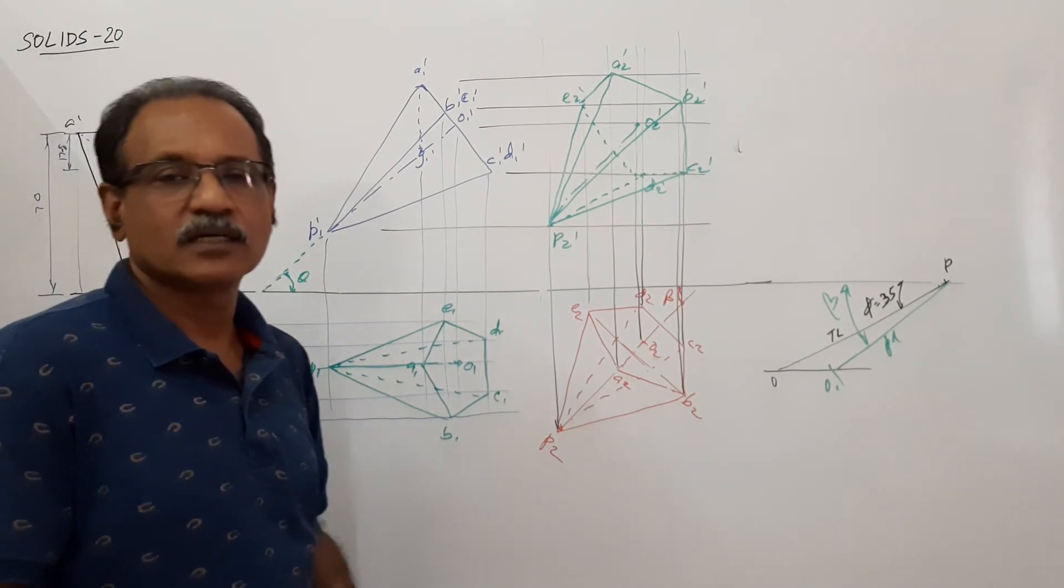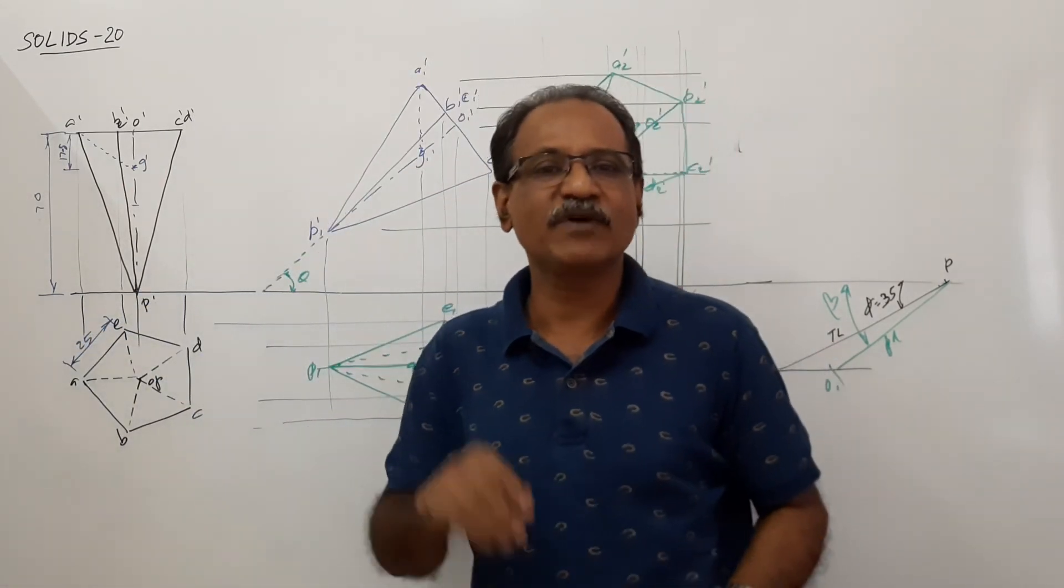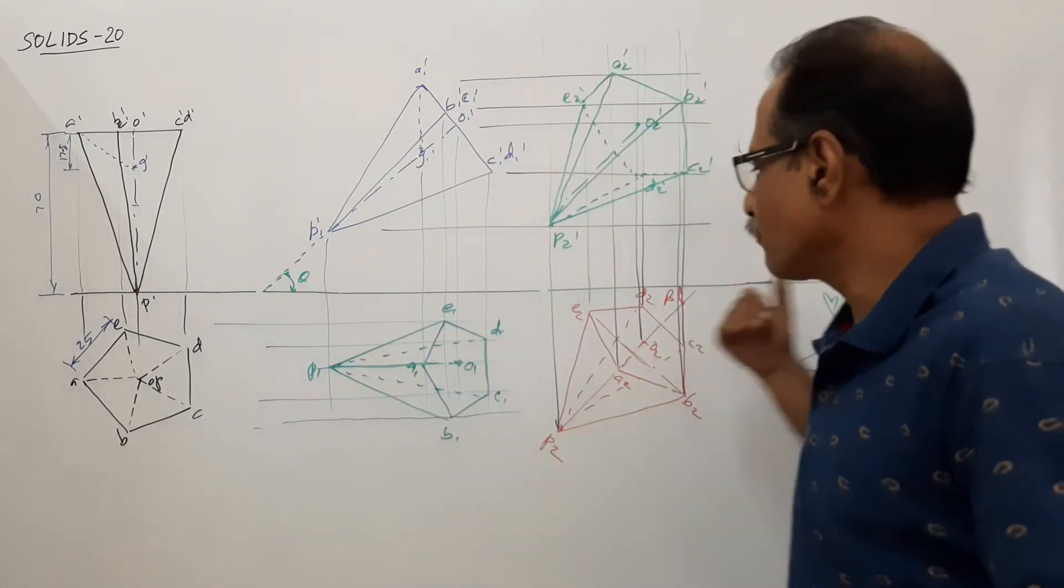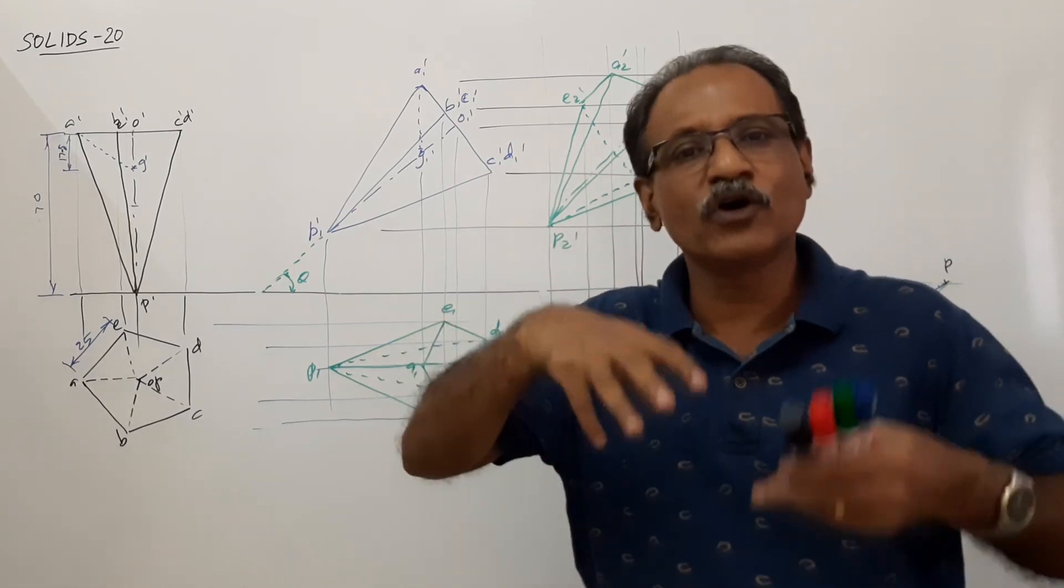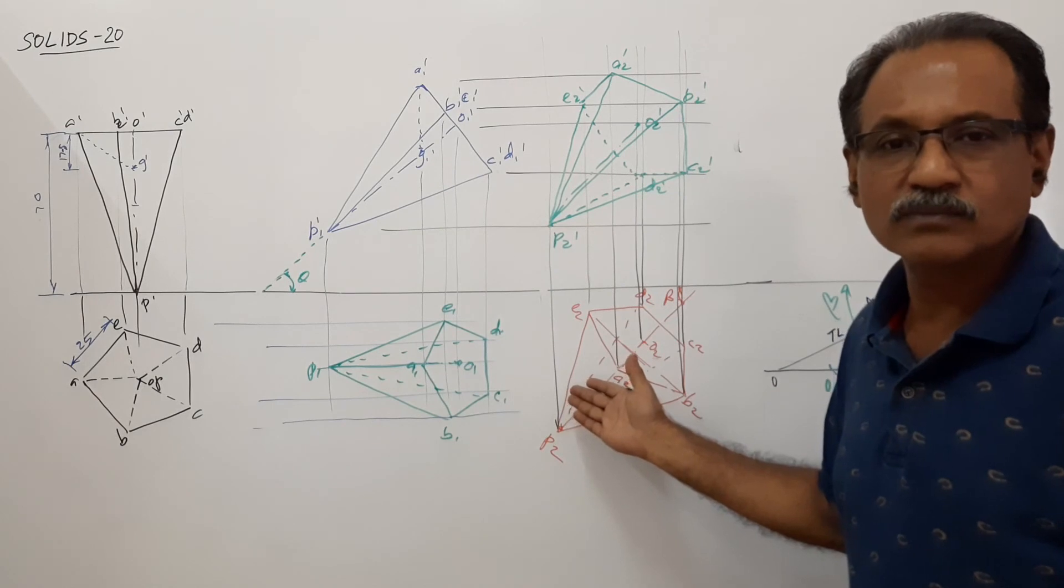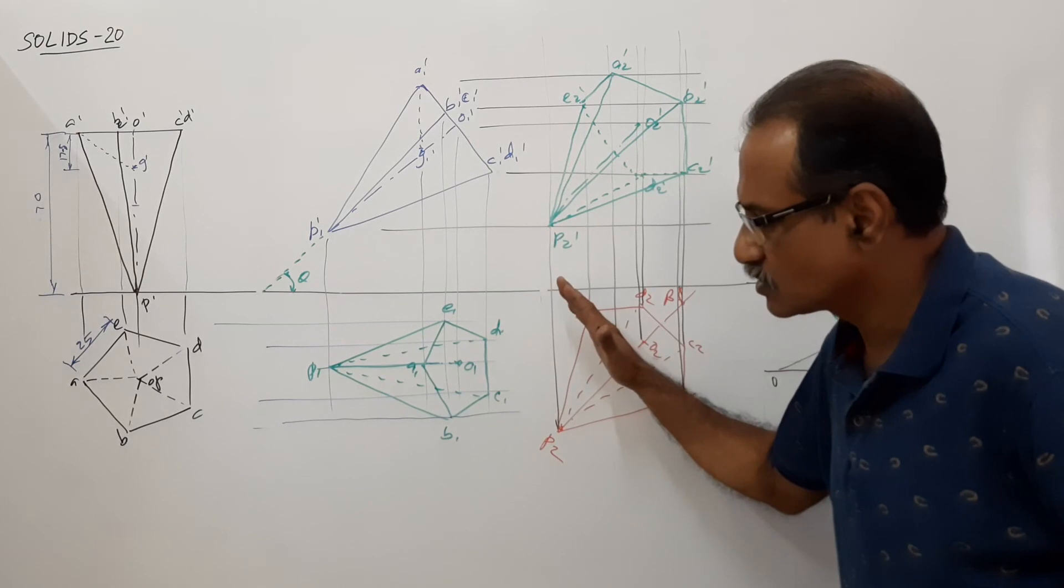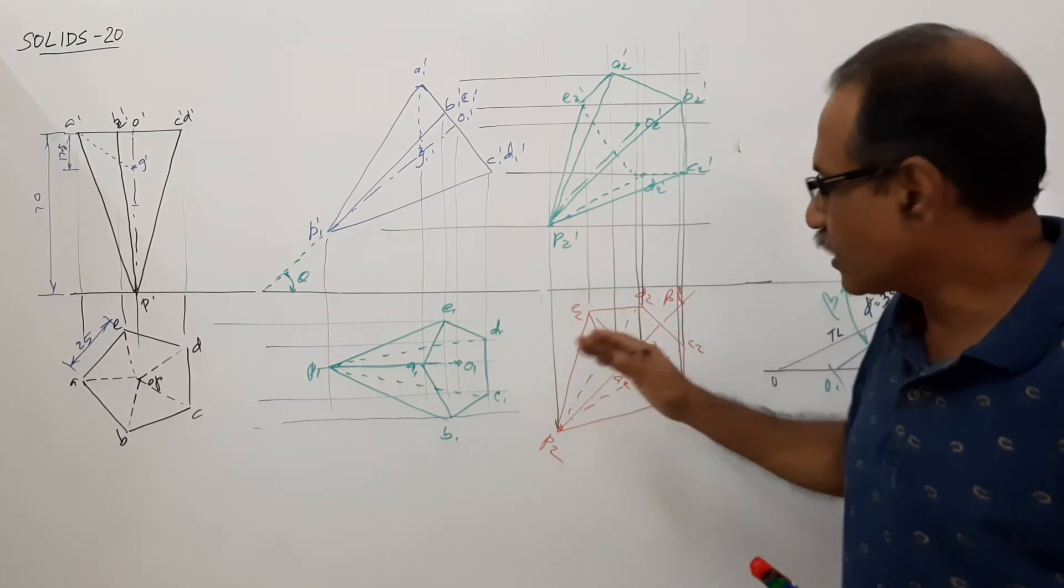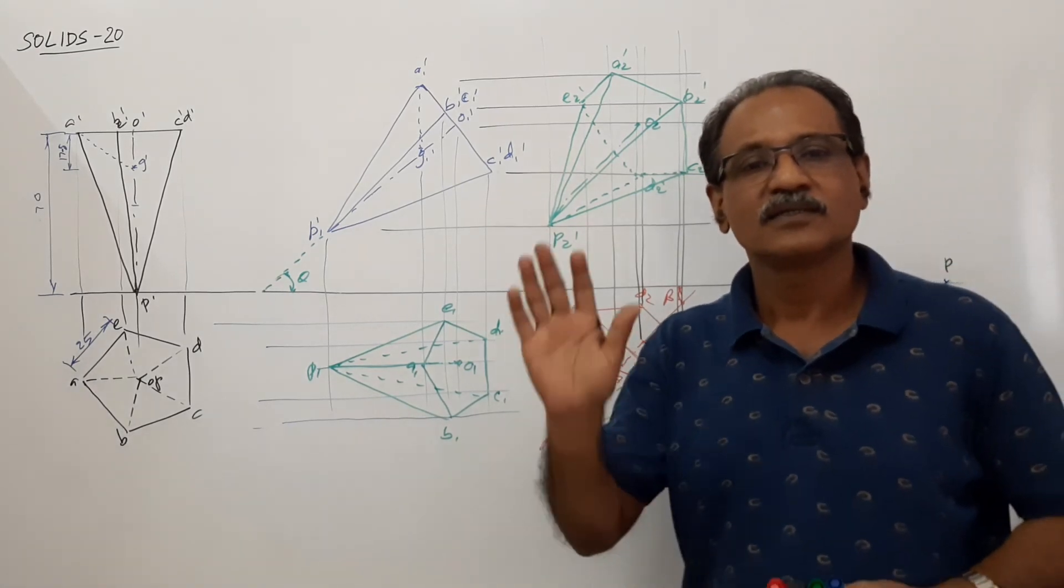This is the redrawing method. The pyramid, pentagonal pyramid suspended about corner A with axis making 35 degrees to HP. Phi is given, so you have found out beta. If beta is given, if the top view of axis is making some angle to XY line, you can directly take the beta and draw this. You can draw in either direction, like this or this. You can bring the apex also nearer to VP. Now the base is nearer to VP. You can also bring the apex nearer to VP. Thank you.